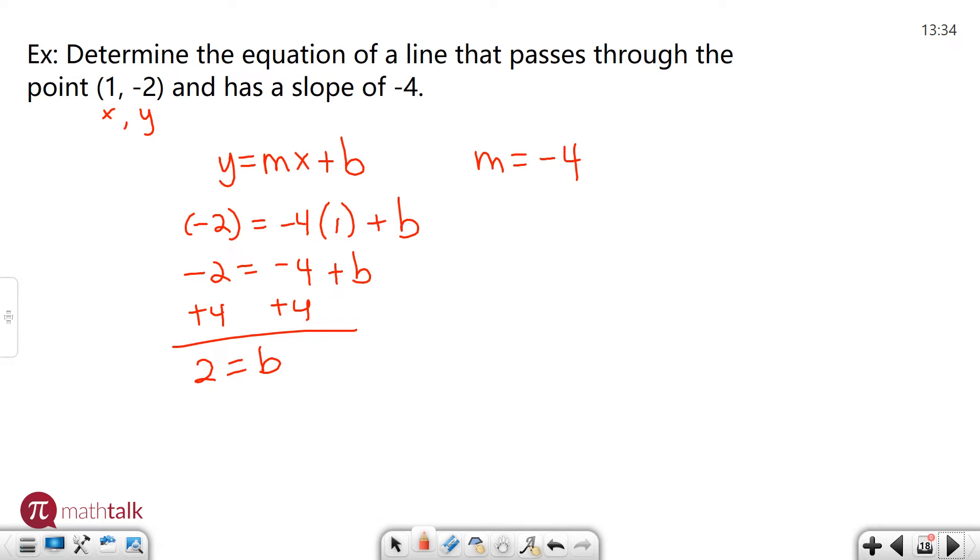Now that I've solved for b I need to go ahead and finalize my equation. So my final equation should be y equals m, your slope, negative four x, and b is positive two. This is the equation of a line that passes through the point (1, -2) with the slope of negative four.